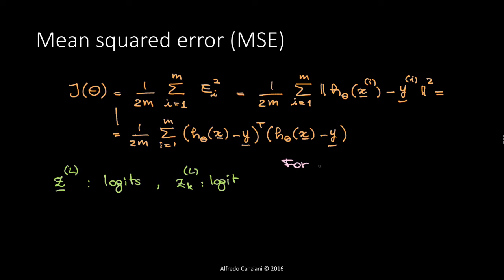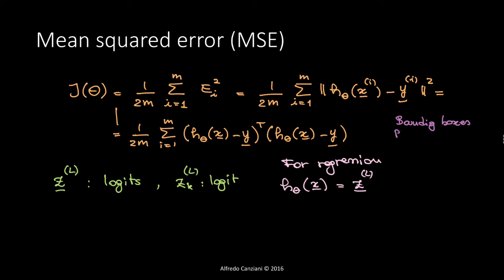If we would like to perform regression, our hypothesis on x would simply be the logit — we don't apply the last sigmoid or any final non-linear function. For example, we could have bounding box prediction where h_theta could output four numbers giving the coordinates of the bounding box, or for learning the steering angle of a self-driving car, h(x) would simply be a scalar.